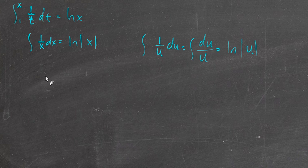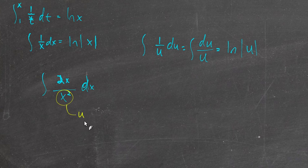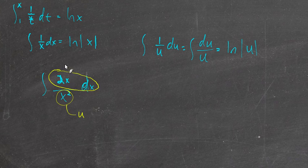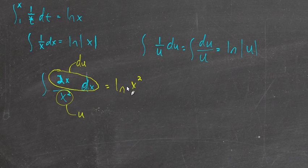Let's take a really simple example: the anti-derivative of 2x over x squared dx. This x squared is a function — we could call it u. Up top, we could have 2x dx in the numerator. If this is u, then this would be the derivative of u. And so the anti-derivative would be the natural log of u, which is x squared. If we can see functions this way — as a function underneath its own derivative — we can use the natural log to take anti-derivatives.